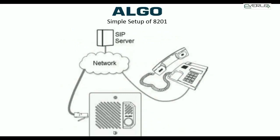Looking at the simplest setup — just using it as a door phone or intercom with no lock control — you simply plug it into your network via a PoE cable that connects to the server, program it, and tell it to ring an extension or multiple extensions in your building. This same setup works for both cloud and local server environments. There are no special requirements for the 8201 to work on either — it simply just works.